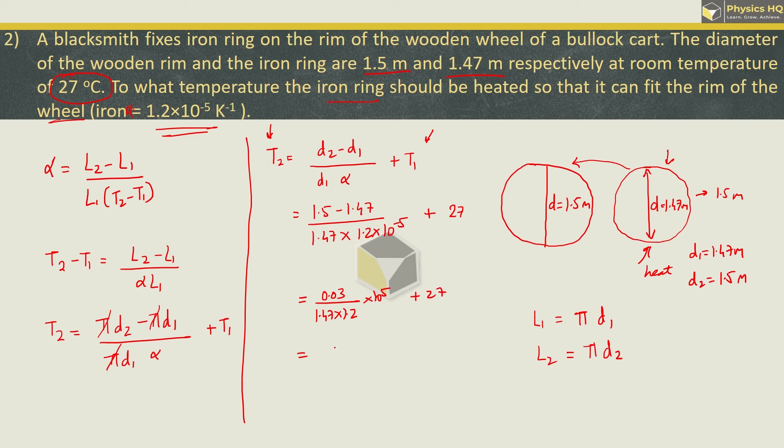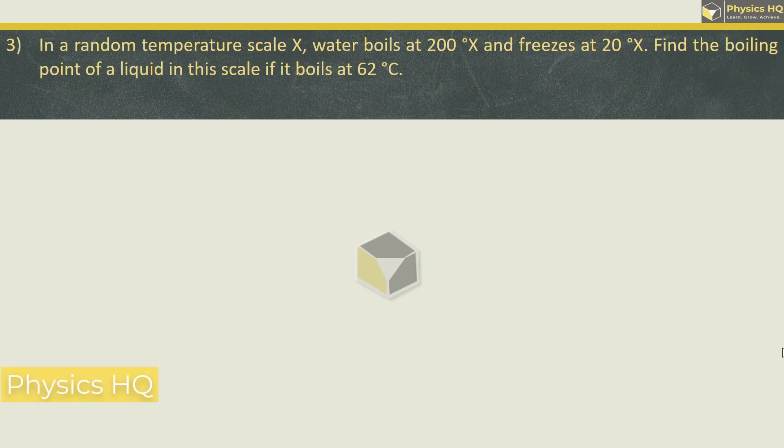If you do it in Kelvin then it will be no difference. If you solve it in Celsius the answer will be in Celsius. In the numerator we got 0.03 divided by 1.47 into 1.2 into 10 raised to minus 5 plus 27. Now when you simplify this first term it will be 1700.7 plus 27. So finally we got the final temperature to be 1727.7 degrees Celsius. Hope you all understood this.